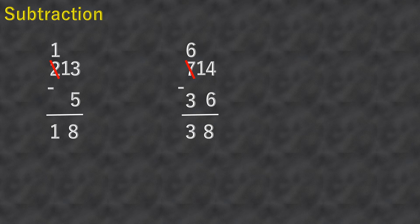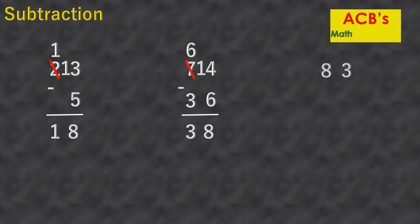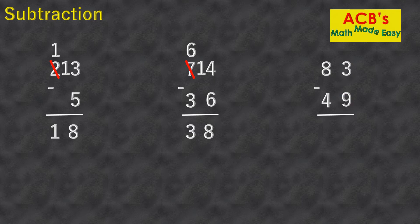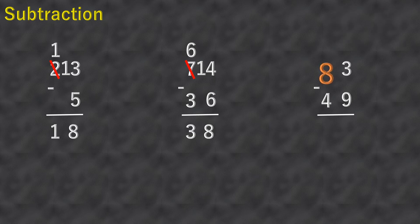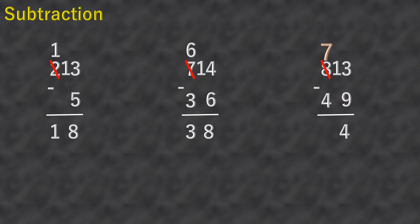Eighty-three minus forty-nine. Nine is greater than three, so it is not possible to subtract directly. We'll borrow one from the eight — it will become seven and the three will become thirteen. Thirteen minus nine equals four, and seven minus four equals three. So eighty-three minus forty-nine equals thirty-four.